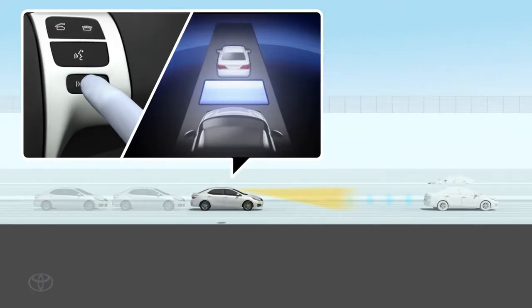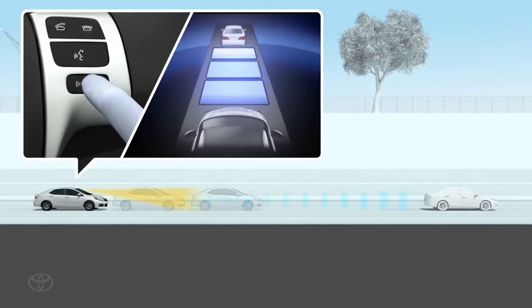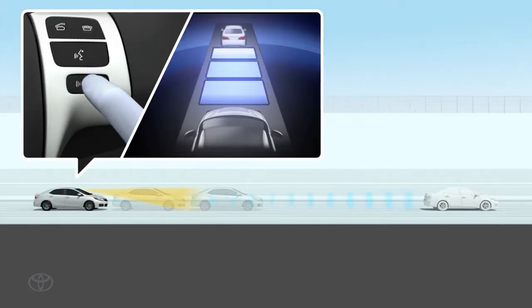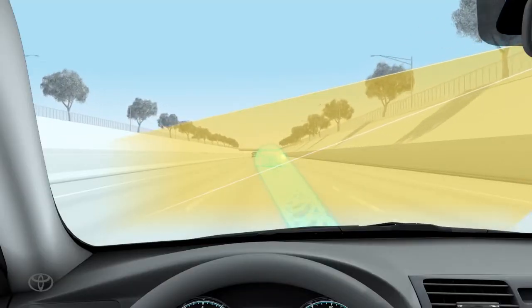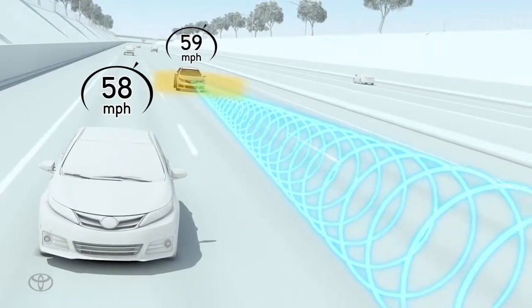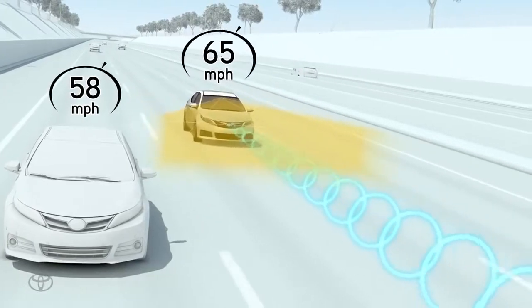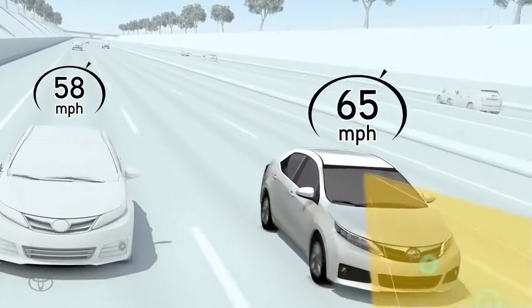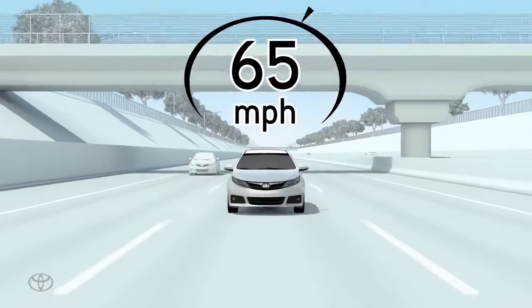Pressing the button allows the driver to choose from three vehicle-to-vehicle distance settings. When there is no longer a preceding vehicle driving slower than your vehicle's set speed, the system accelerates until the set speed is reached and returns to constant speed cruising.